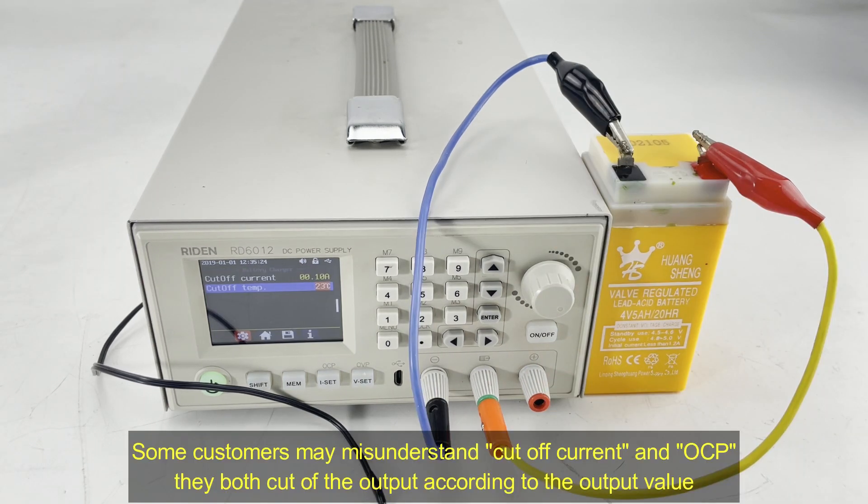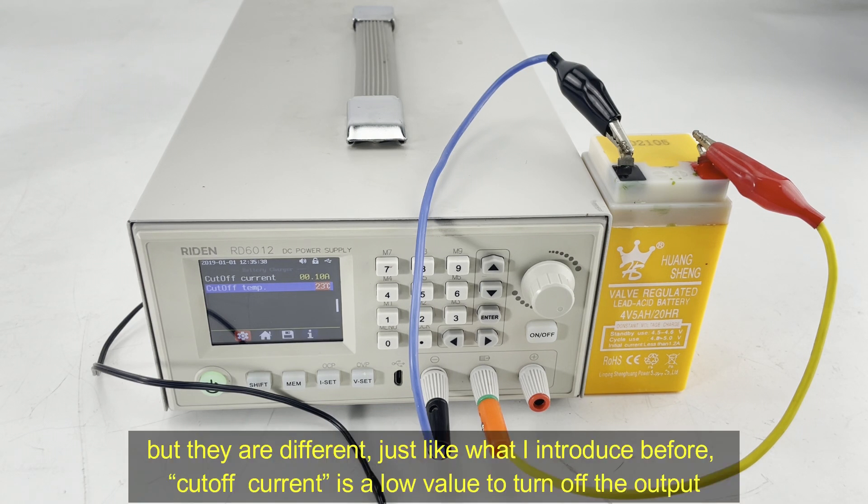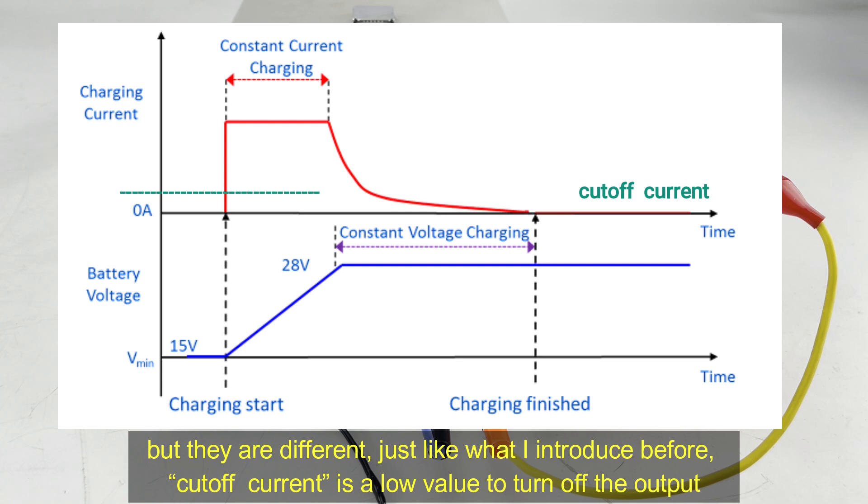Some customers may misunderstand cut-off current and OCP. They both cut off the output according to the output current value, but they are different. Just like what I said before.